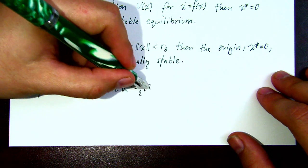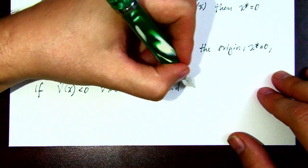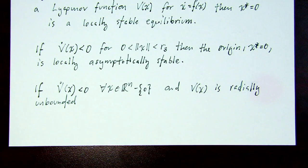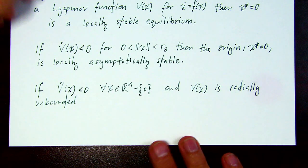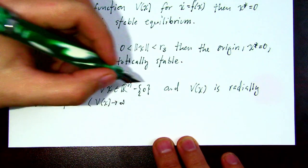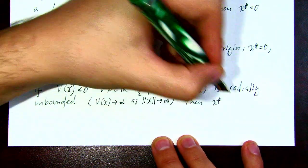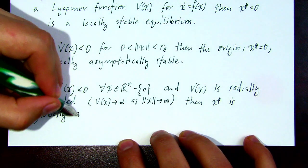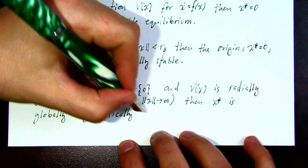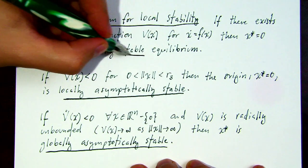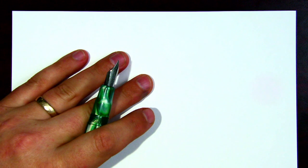If we want to expand the asymptotic stability property and make it global, that requires a couple of things: first, the Lyapunov function V must be radially unbounded, it must be positive definite everywhere, and V-dot must be negative definite everywhere. If V(x) is positive definite and V-dot is negative definite everywhere, then the system is globally asymptotically stable.